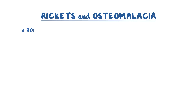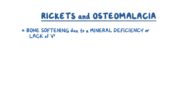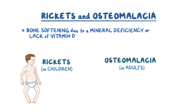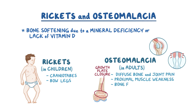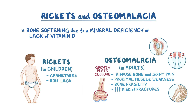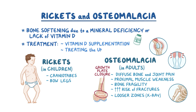As a quick recap, rickets and osteomalacia are conditions in which bone softening occurs due to a mineral deficiency or lack of vitamin D. Rickets presents in children and osteomalacia happens in adults, which depends on whether there was growth plate closure. Some key symptoms of rickets are craniotabes and bow legs. For both osteomalacia and rickets, key symptoms are diffuse bone and joint pain, proximal muscle weakness, bone fragility, and increased risk of fractures with minimal trauma. There may also be Looser zones on x-rays. Treatment typically involves oral vitamin D supplementation and treating the underlying cause.